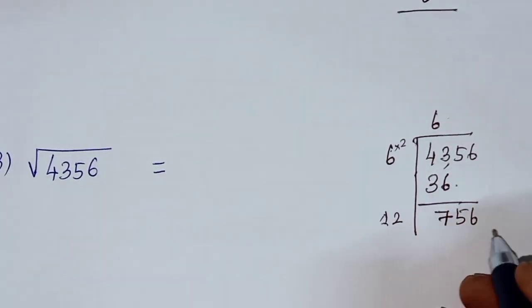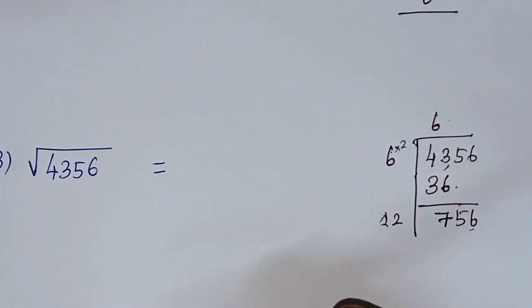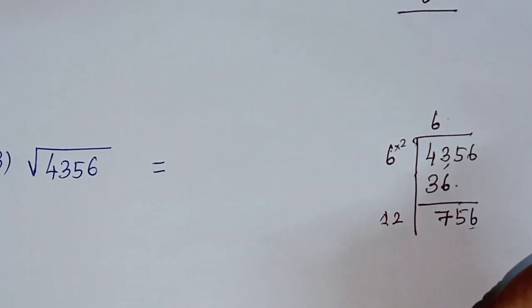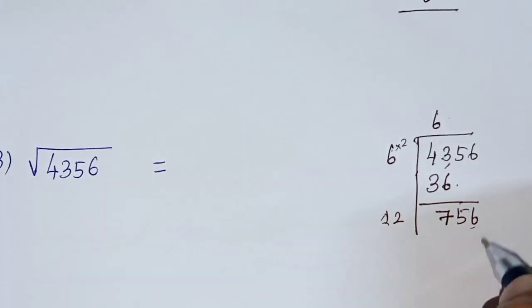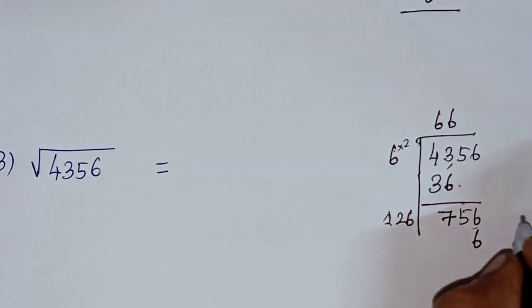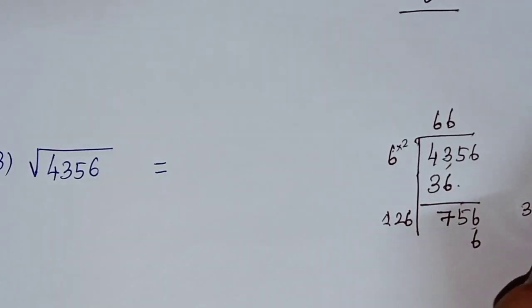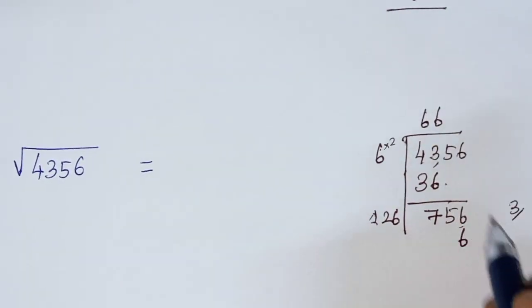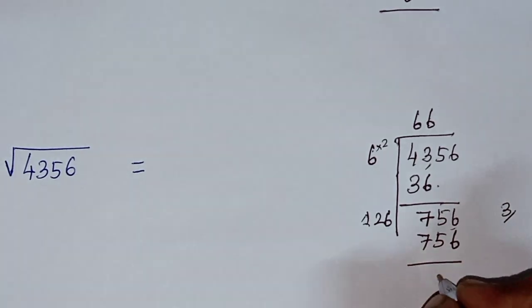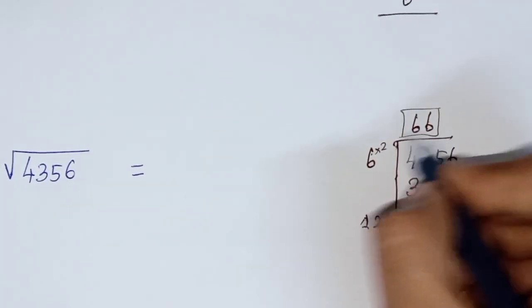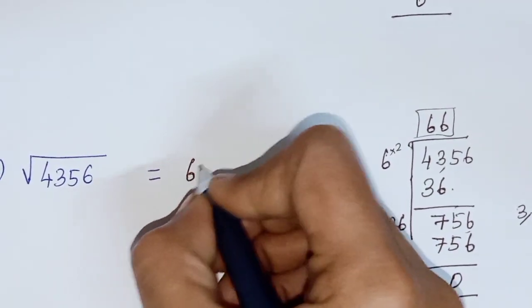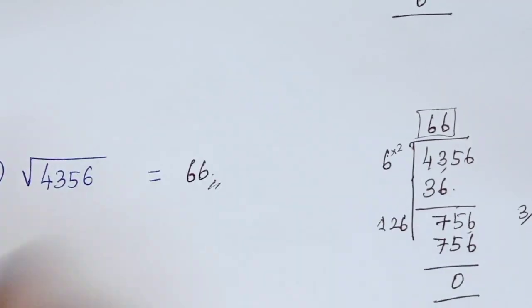Last digit is 6. 6, 6 is 36. Balance 3. 12, 6 is 72. 72 plus 3, 75. So 756 minus 756 is 0. Reminder is 0. Answer 66. 4356 equal to 66. This is the answer.